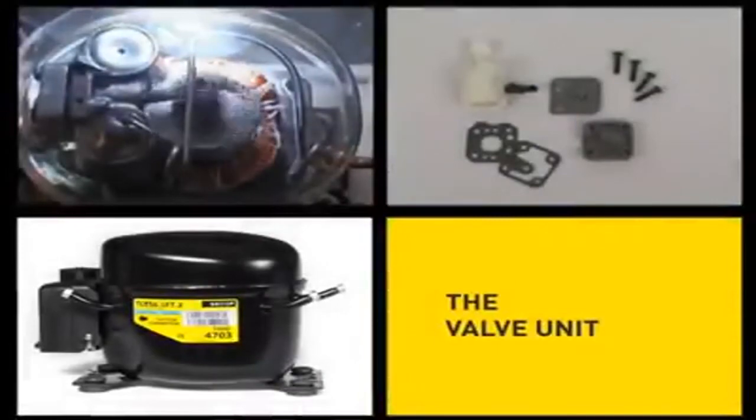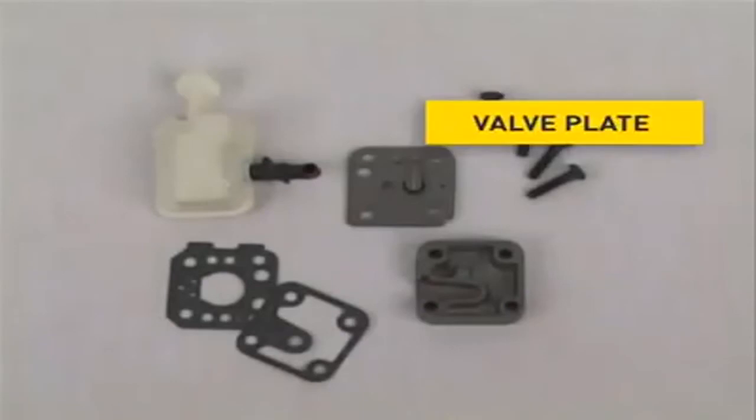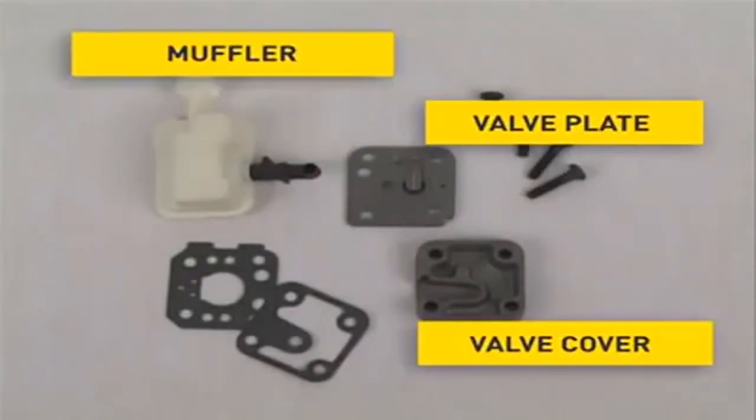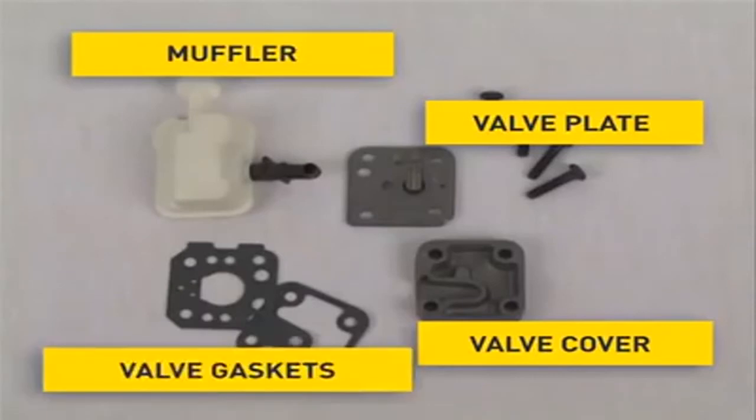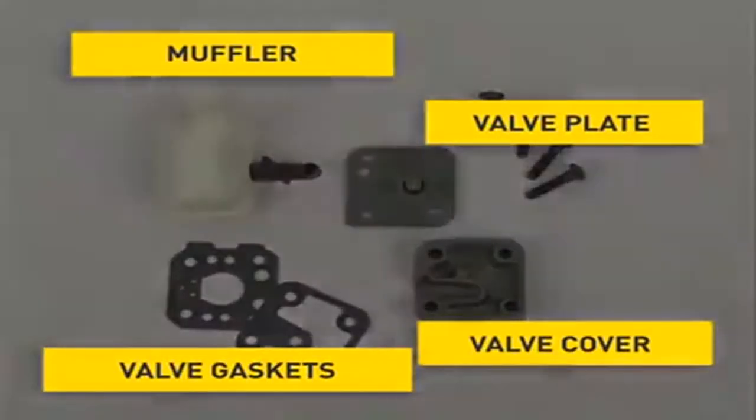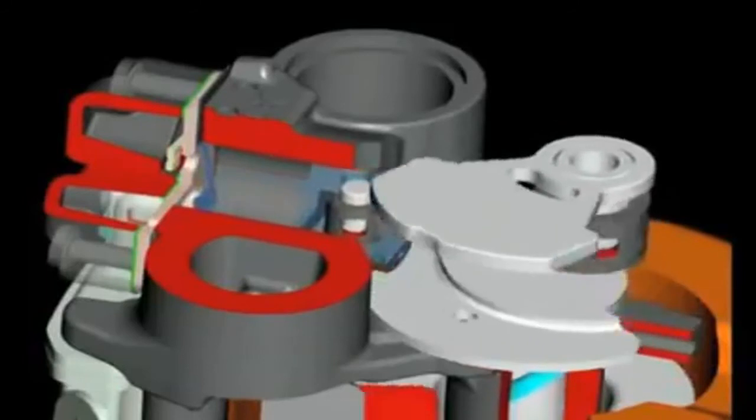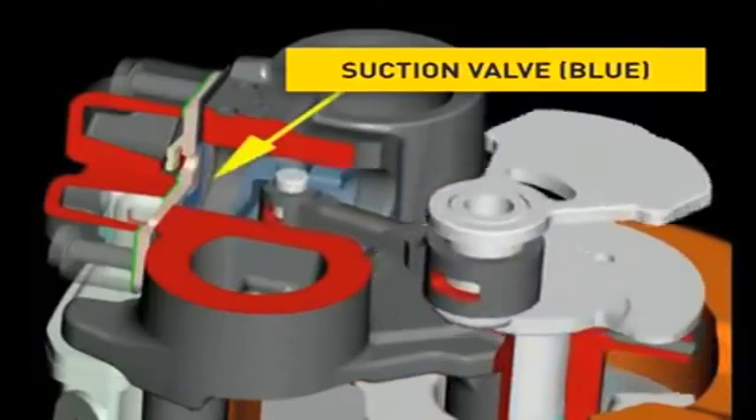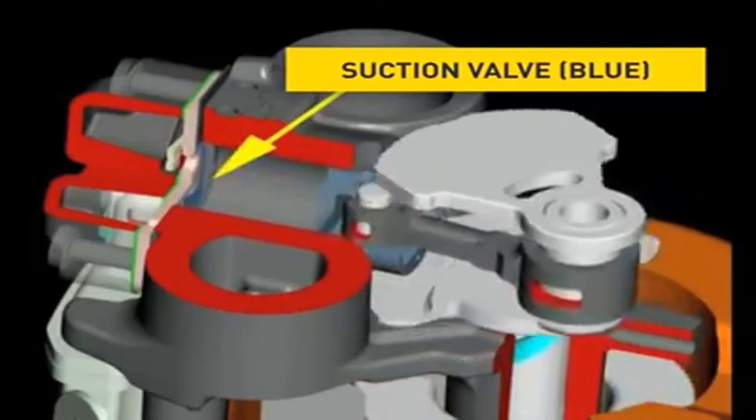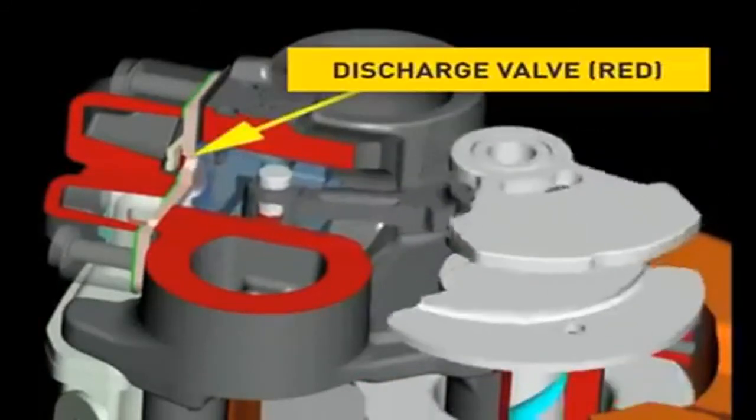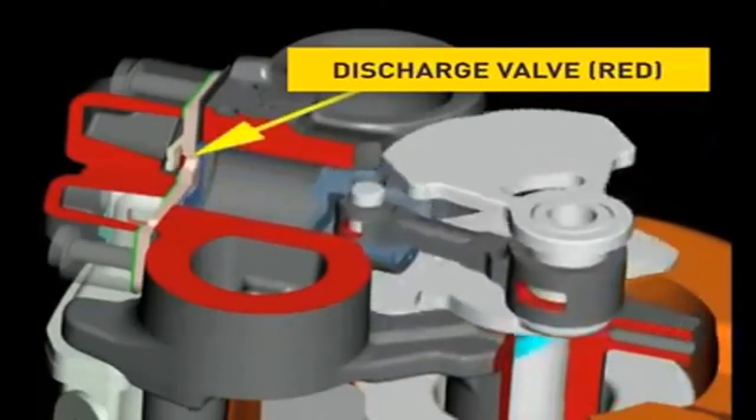The valve unit essentially consists of a valve plate, a valve cover, a muffler, as well as two valve gaskets. The suction and the discharge valve are installed on the valve plate. Both valves are bleed valves made out of spring steel and they open and close the openings of the valve plate during the suction and discharge process respectively.